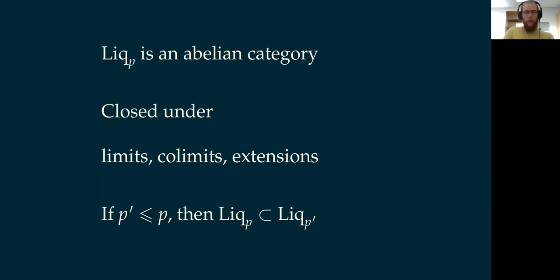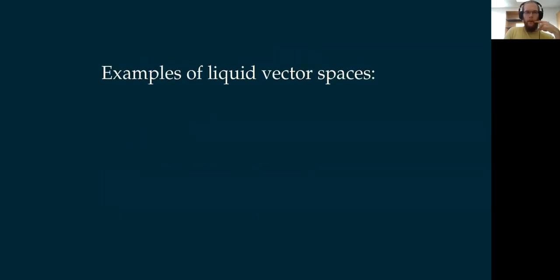This category has good properties. First, it's an abelian category. As a subcategory of condensed ℝ-modules, it's closed under all limits, all colimits, and all extensions. This means if you have liquid vector spaces and perform typical categorical constructions — direct sums, products, kernels, cokernels — you stay in the category of liquid vector spaces. They also have the property that if you decrease the parameter p, the category becomes bigger.